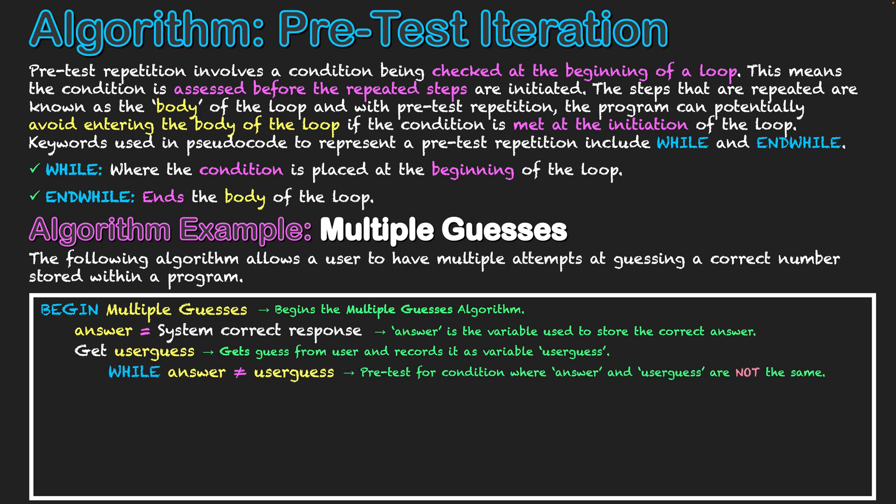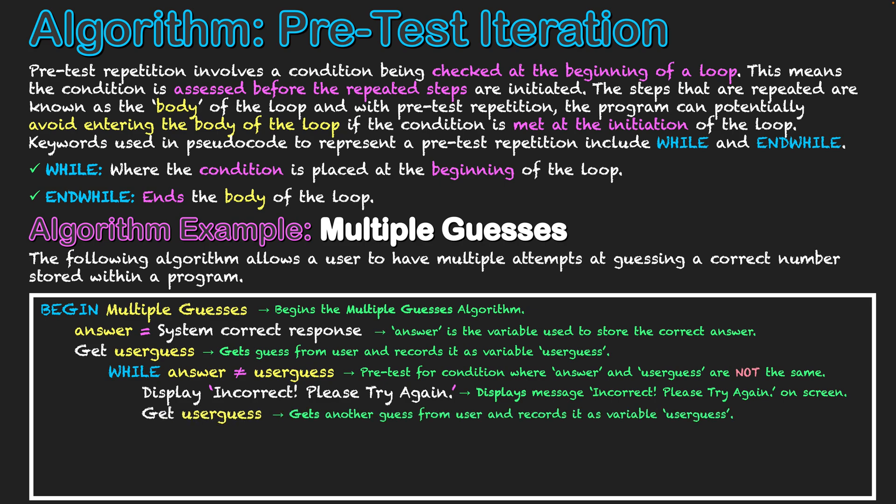We're going to start off our loop with WHILE. So while 'answer' does not equal 'userguess' — that's an equal sign with a line through it — it's a pre-test for the condition where answer and userguess are not the same. It's likely that the user is going to be wrong the first time. So while that is not the same, we're going to be displaying on screen 'Incorrect! Please Try Again,' and then we've got to get another attempt at userguess. They're going to enter in a new value for userguess and hopefully get it right the next time, and that then will complete our loop.